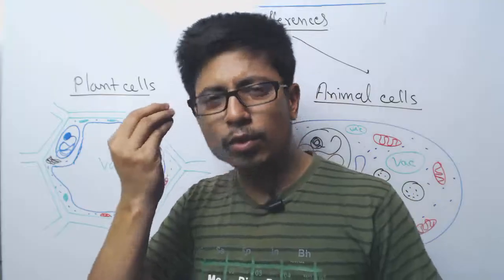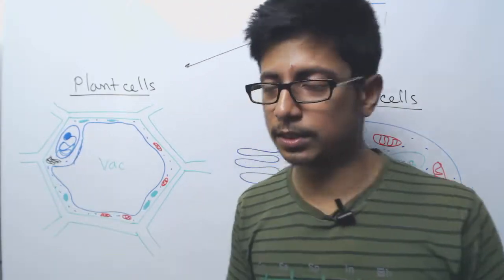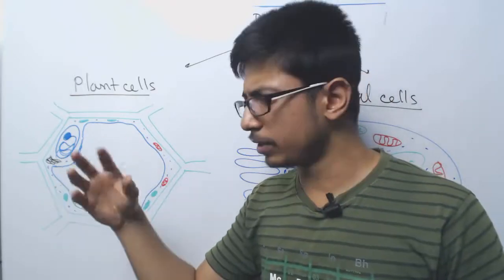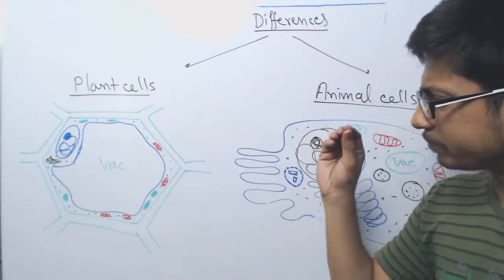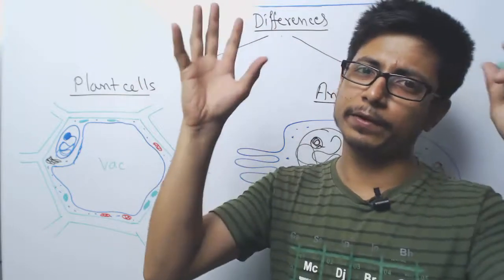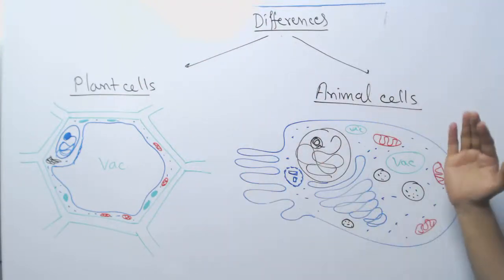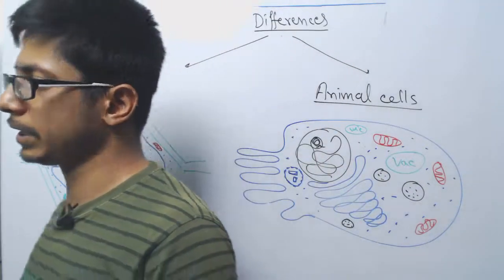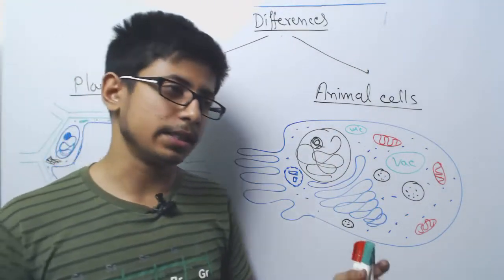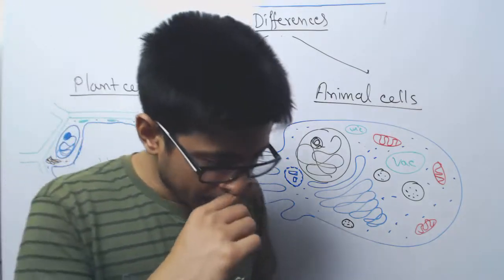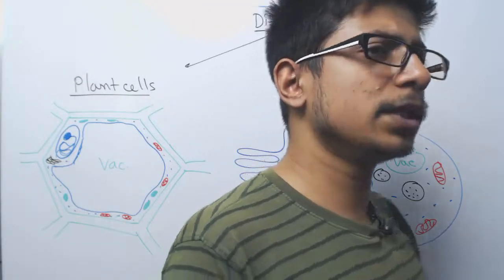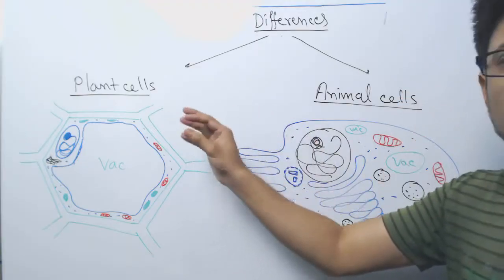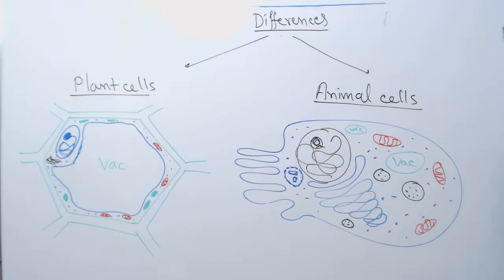Plants also have chromoplasts, which contain carotenoids and other color-generating compounds that give different colorations to plants. This is not common in animals, where pigmentation is generally handled by melanin, or in some animals like fish and birds by different color substances — but nothing like chloroplasts or chromoplasts. Animals have a different process for that.